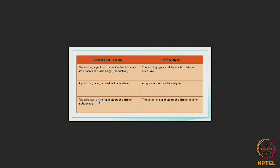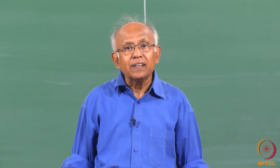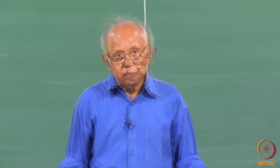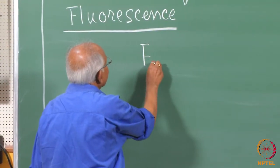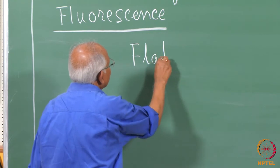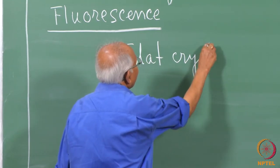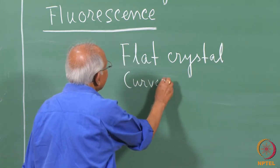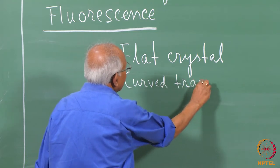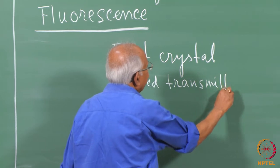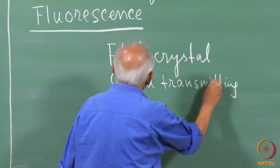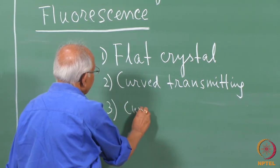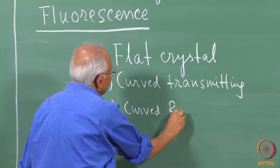Depending on the type of analyzing crystal used, X-ray spectroscopy can be of three types: the flat crystal type, the curved transmitting type, and the curved reflecting type.